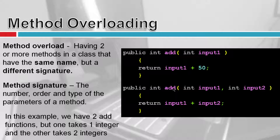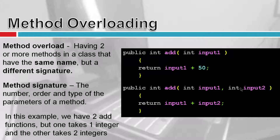Sometimes overloaded methods do very similar things. For example, in this function I'm hard-coding 50 as the second input, so it'll add whatever value I pass in plus 50. In the other version, I give the user more flexibility — instead of hard-coding 50, they can pass in another value as the second parameter.